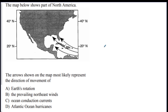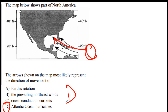The last question: the arrows show the most likely representation of the movement of what? This is a hurricane track — they all come from Africa and move over toward the United States. Answer D. Alright, so there's your summary of climate and severe weather.